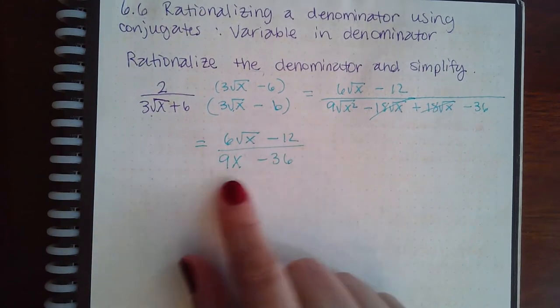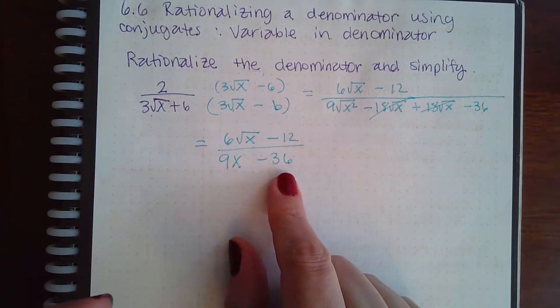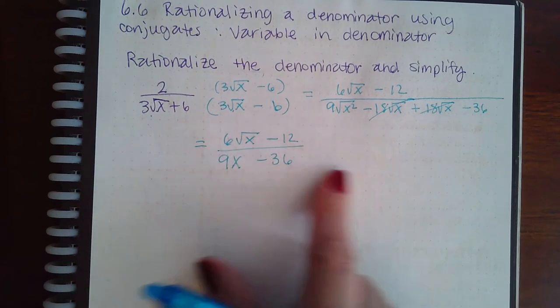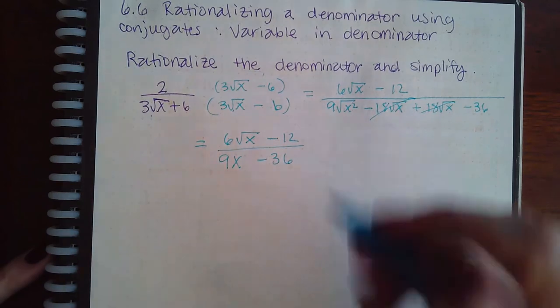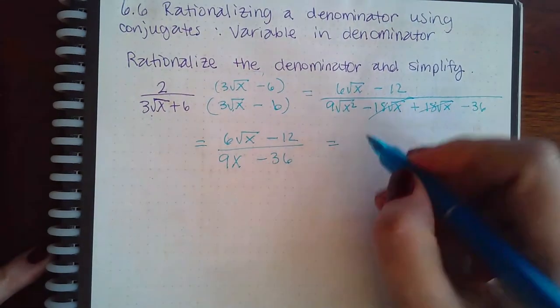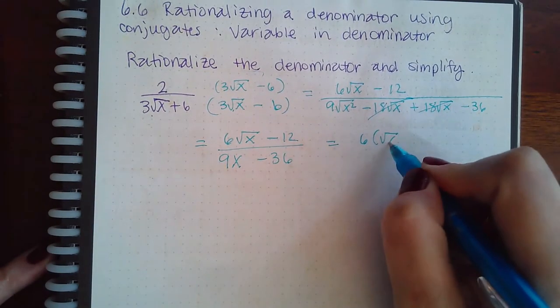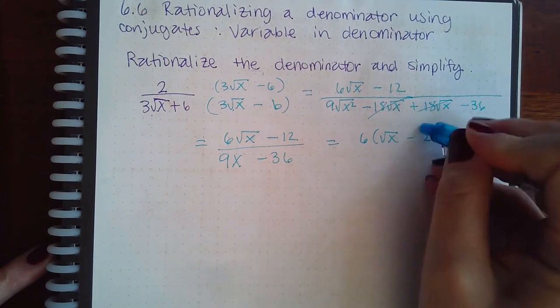The only way to simplify when it has binomials is factoring. The more complicated these fractions get, you have to go back to factoring. So I can factor out a 6 from both of those terms in the numerator, and then this would become a 2.